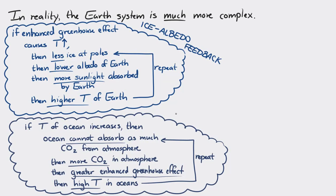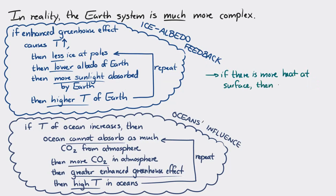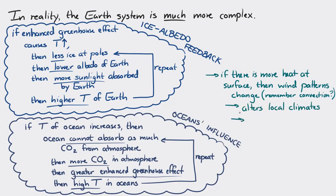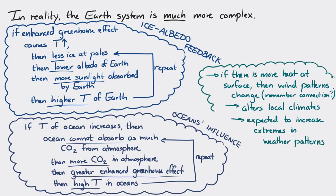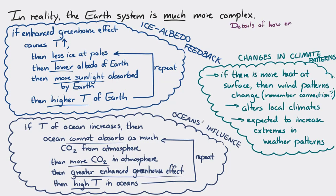Another effect: more heat at the surface will change wind patterns, which we saw when looking at convection, sea breezes, and global convection currents. Changing wind patterns will change local climates on Earth, with one major expected effect being larger extremes in weather patterns. The idea that increasing greenhouse gases causes an enhanced greenhouse effect and raises average Earth temperature is very well-accepted science, supported by observed increases in Earth's average temperature over the past few decades. However, the details of exactly how the enhanced greenhouse effect will affect regional or local scales remain an active area of investigation.